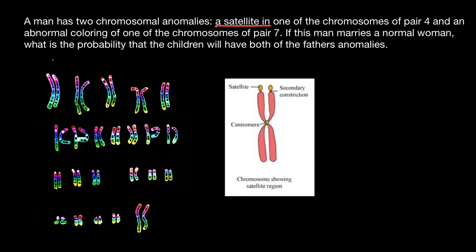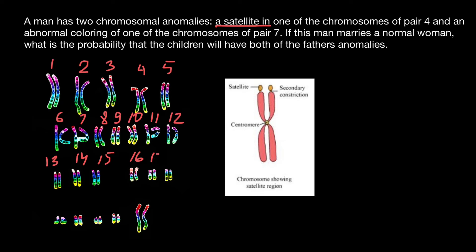Now let's number the chromosomes. This is going to be pair number one, pair number two, three, four, five, six, seven, eight, nine, ten, eleven, twelve, thirteen, fourteen, fifteen, sixteen, seventeen, eighteen, nineteen, twenty, twenty-one, twenty-two, and twenty-three.